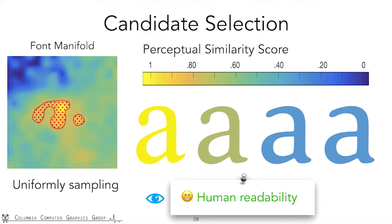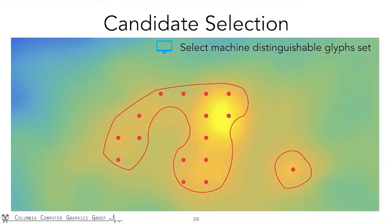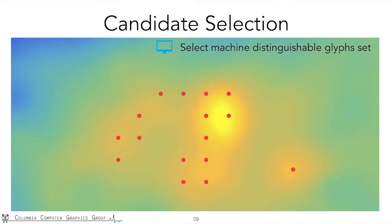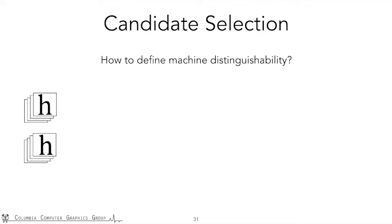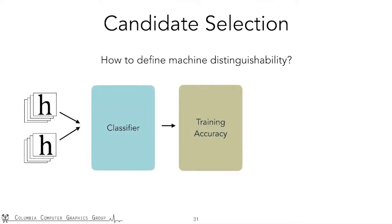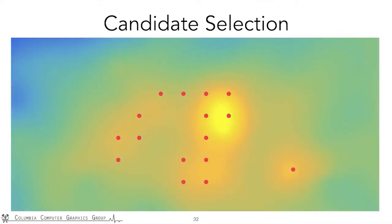But those sampled glyphs might be too similar to distinguish by the computer. So we want to choose a subset of those glyphs that can be robustly recognized by the computer. Interestingly, this step can be formulated as a classic graph problem. The sampled points are nodes on the graph, and two nodes are connected by an edge if their corresponding glyphs are distinguishable from each other. To define computer distinguishability, we render a set of images of the two glyphs under different lighting conditions and use those images to train a neural network classifier. If the training accuracy is higher than 95%, we treat those two glyphs as distinguishable. Otherwise, they are indistinguishable.